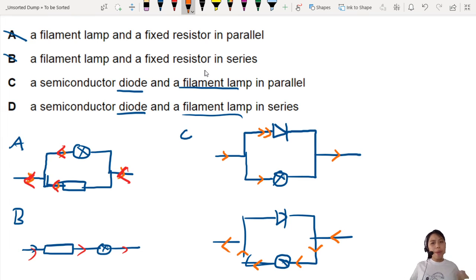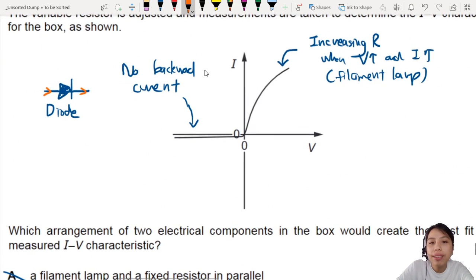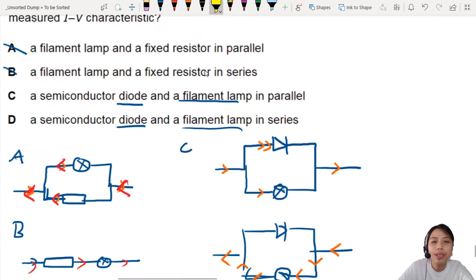So hang on a second. So that means you can allow current to flow in both directions also. Current can't flow through the diode, but it will choose to go through the filament lamp. So I don't think you can do it in parallel because we should not have a current in the backwards direction. So here, remember this. This is a very important clue.